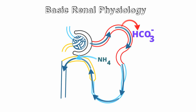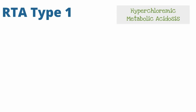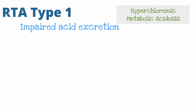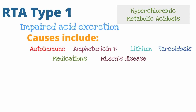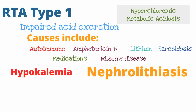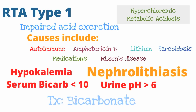Let's begin by talking about RTA type 1. RTA type 1 is a process that affects the distal convoluted tubule. As the distal convoluted tubule is involved in acid secretion, if it is unable to excrete acid we actually produce an alkaline urine. Type 1 RTA presents with a hyperchloremic metabolic acidosis. Causes include autoimmune disorders such as lupus or rheumatoid arthritis, amphotericin B, and lithium.